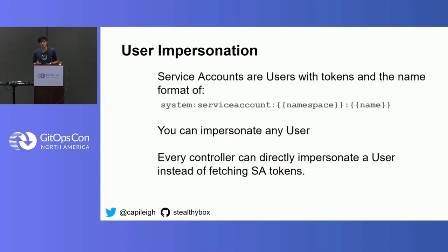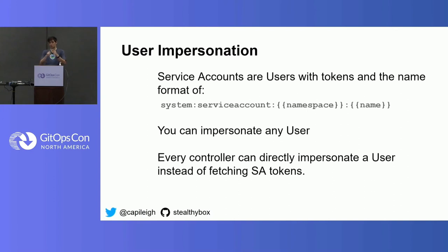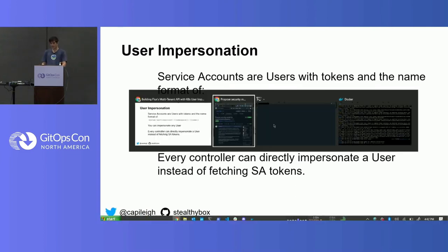So I want to talk a little bit about user impersonation. This is a mechanism we became really curious about with the Flux project, and we started writing up a proposal — it's proposal 582 on the repository, if you want to go look at it. Service accounts are basically just normal users. Every user just has a string that represents it inside of the Kubernetes API. I can demonstrate that right now.